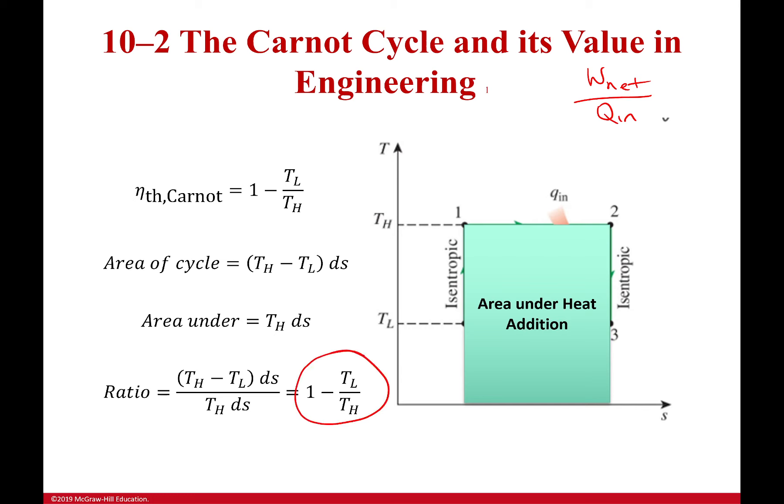There it is. There's your thermal efficiency. We've got our equation. So we're still using the same equation and works out really well and this is always the max upper limit to efficiency for any heat cycle whatsoever that's running between these two temperatures.